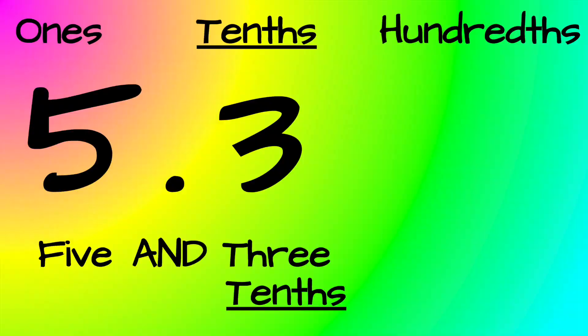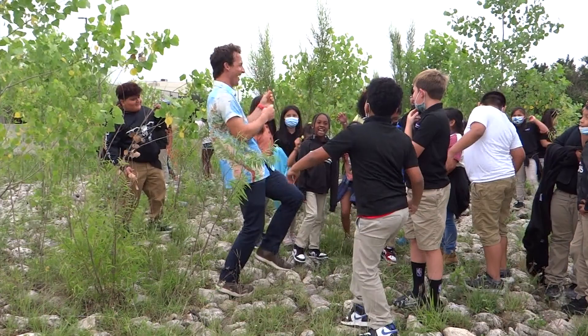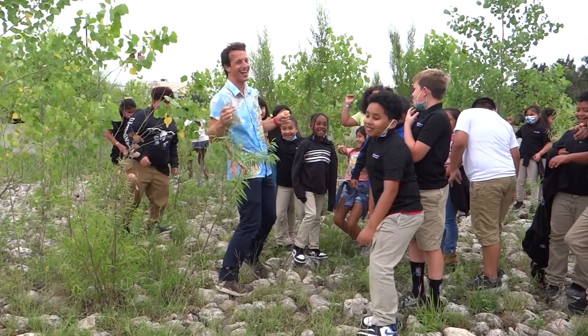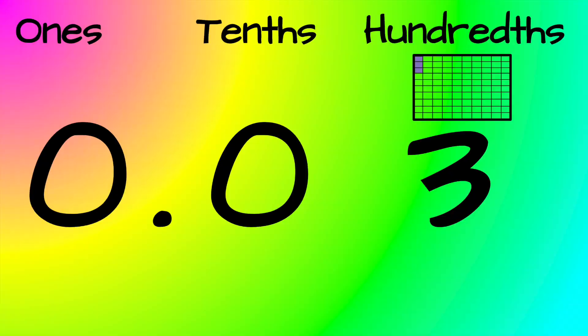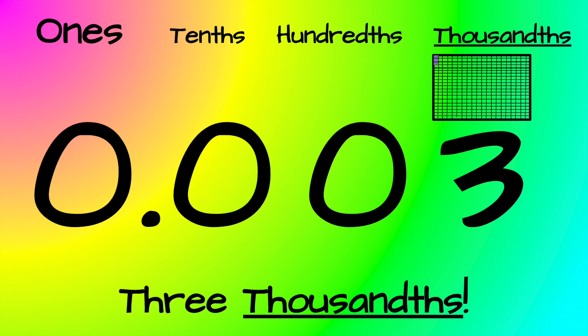Five and three tenths, five and three hundredths — now you're professional. And what if it's smaller than hundredths? That means we're on thousandths, to the right of the decimal — but we found them.